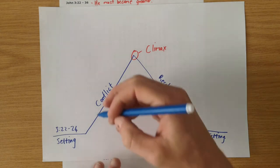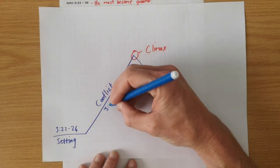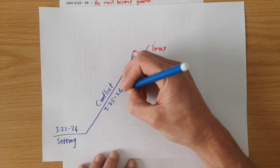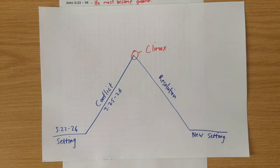And the conflict starts arising in this setting, particularly in verses 25 to 26. We see the Baptist's disciples are jealous that Jesus' popularity is eclipsing the Baptist's popularity. So that is the conflict. Is this actually a problem? What's going on here, John?